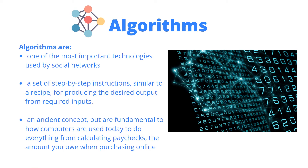Algorithms are one of the most important technologies used by social networks. Algorithms are a set of step-by-step instructions, similar to a recipe, for reproducing a desired output from a required input. Algorithms are an ancient concept but are fundamental to how computers are used — they do everything from calculating paychecks to the amount you owe when purchasing online. For instance, Facebook uses algorithms to decide what trending news to list in your trending section, which posts to show on your friend's news feed, and which articles to make available on the mobile news feed.